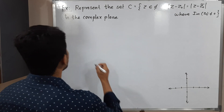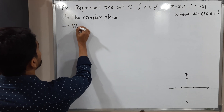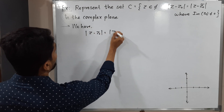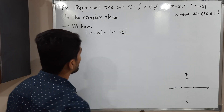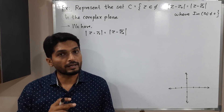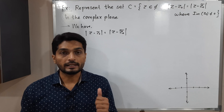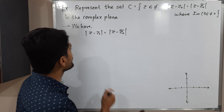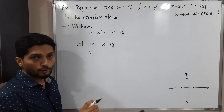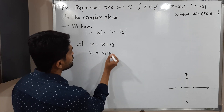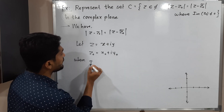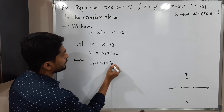We need to find which points satisfy the condition |Z - Z₀| = |Z - Z₀̄|. A complex number can be expressed in Cartesian form, polar form, or exponential form. We will express Z in Cartesian form. Let Z = x + iy, and let Z₀ be the fixed complex number x₀ + iy₀.